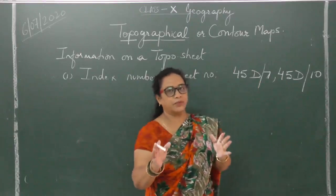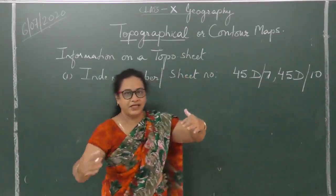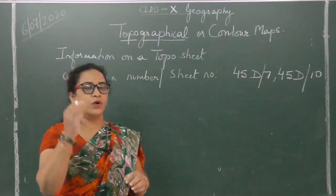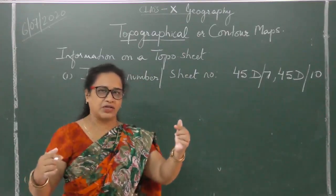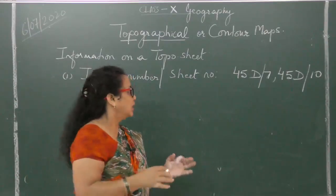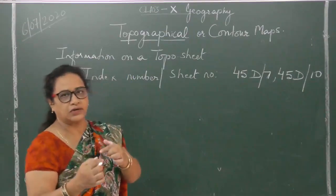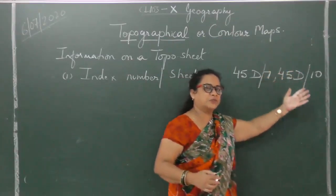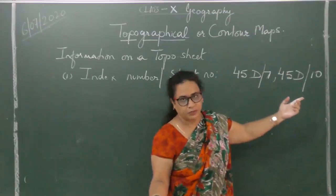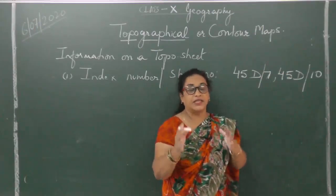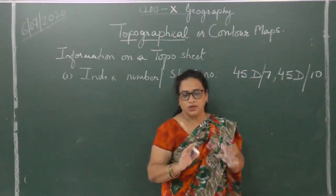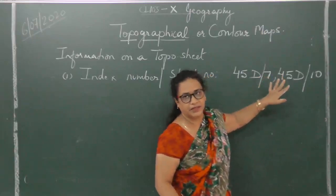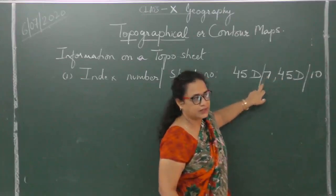It's not just two maps only — from these two maps, many many extracts can be taken out. Just like in your literature in Merchant of Venice you do reference to context — from one act and one scene, many extracts can be taken. Same thing happens here. You can get 45D/7; the previous batch may have got it and you possibly will also. But it will not be the same — there will be similarities but it will not be the same.